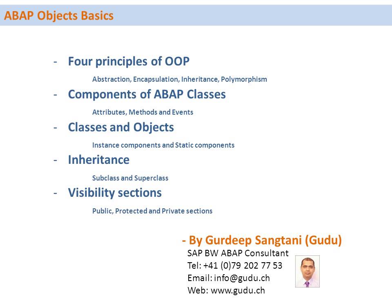Let's summarize what we have seen so far. We have seen the four basic principles of object oriented programming. We have seen the components of an ABAP class — these are attributes, methods and events. We have seen classes and objects and how we can create several objects from a class. We have seen inheritance and how we can derive one class from another. We have seen the visibility sections — public, protected and private — in an ABAP class. With this we conclude the session on ABAP objects basics. Thank you very much.